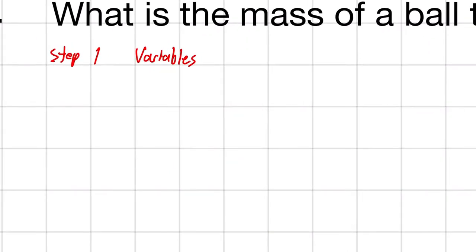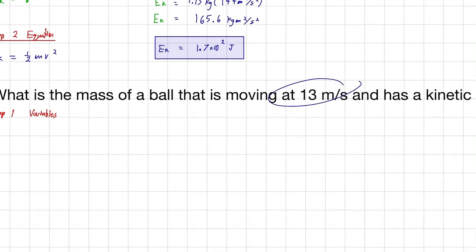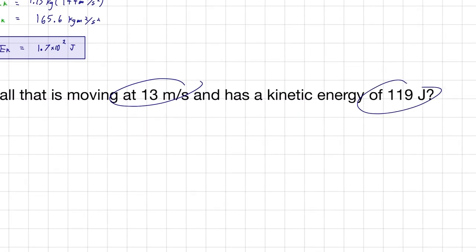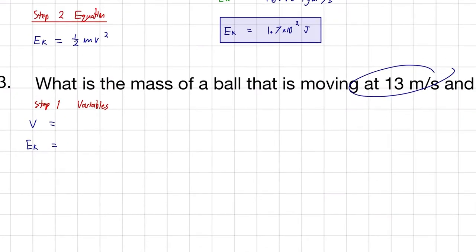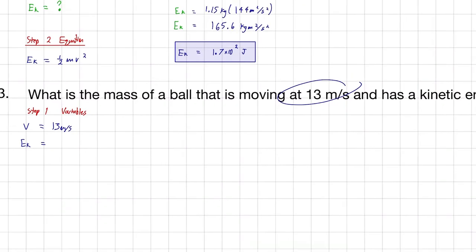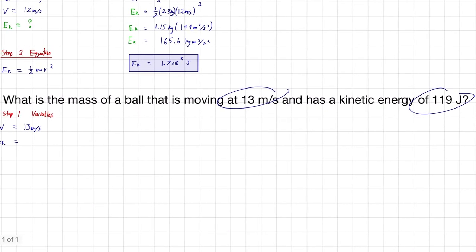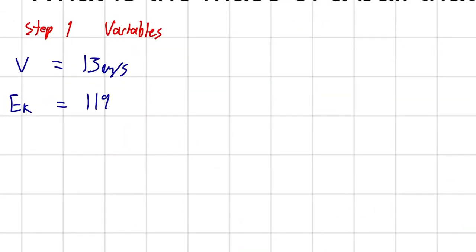So, let's do that. We're going to have a velocity and a kinetic energy. What are the values for them? Well, the velocity is 13 meters per second, and the kinetic energy is at 119 joules.